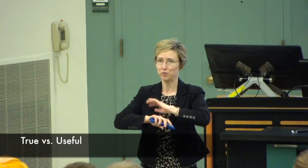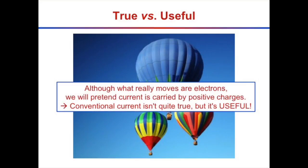Sometimes things are true and correct but don't really help us. Sometimes something is not quite true and correct, but it's really useful. In the case of electron current versus conventional current, we use the conventional current. We pretend that the current is actually carried by positive charges moving around the circuit — not true, it's really electrons — but it's much more useful to talk in terms of those fictitious positive particles.